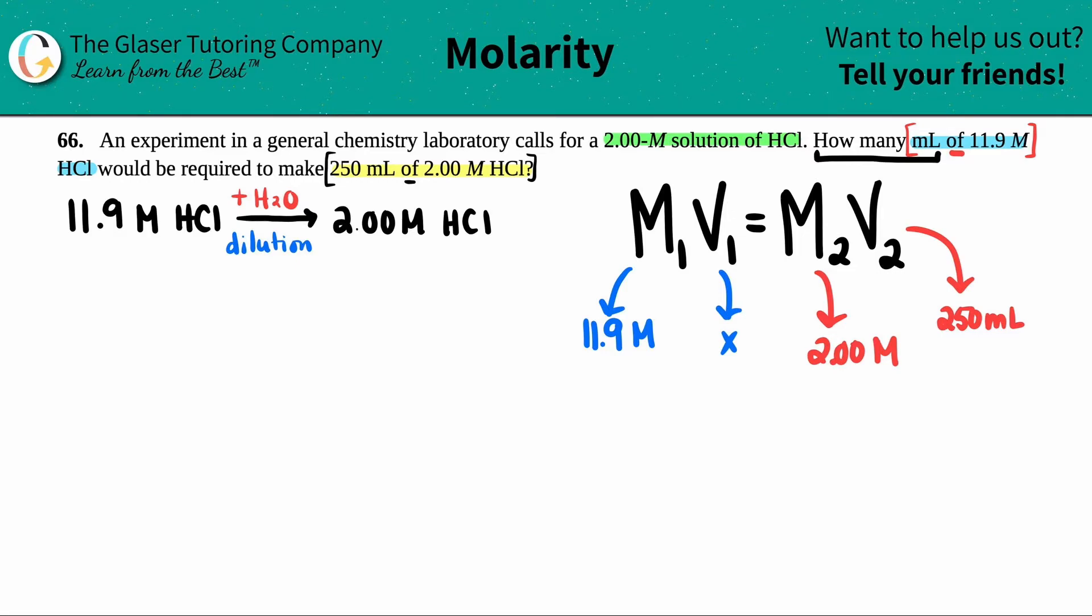So let's see. We have our numbers, we have our X value. Let's plug in 11.9 times X equals 2.00 times 250.